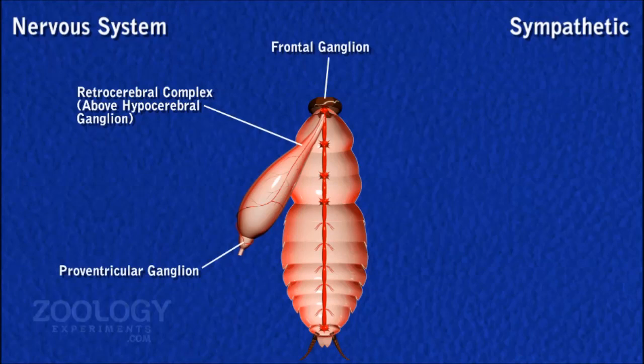The retrocerebral complex is located above the hypocerebral ganglion. It is formed of two paired masses — the corpora cardiaca and corpora allata — and related connectives. The corpora cardiaca is neurosecretory and regulates the heartbeats and peristalsis of the foregut. The corpora allata produces hormones which assist in reproduction and metamorphosis.